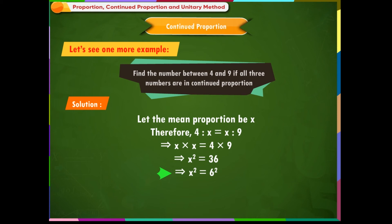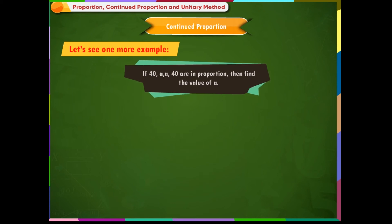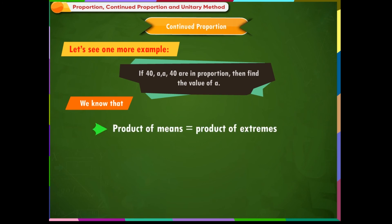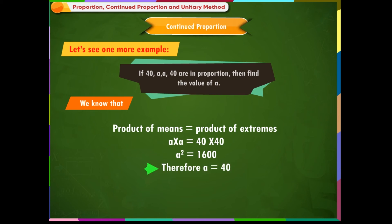Continuing the solution: x² = 6², therefore x = 6. Example 2: If 40, A, A, 40 are in proportion, find the value of A. We know that product of means equals product of extremes: A × A = 40 × 40, so A² = 1600, therefore A = 40.